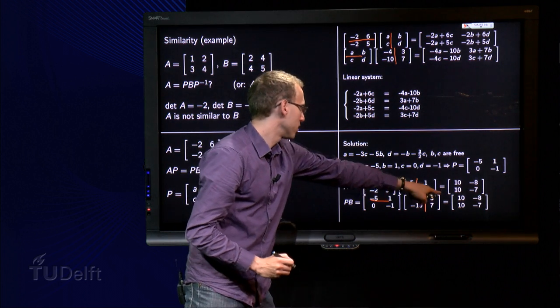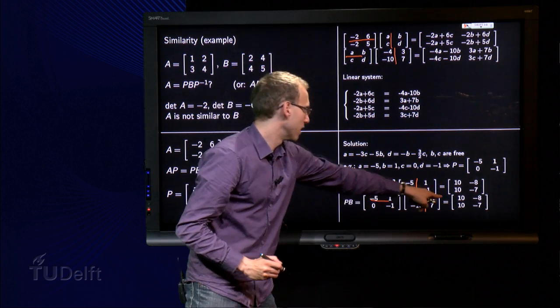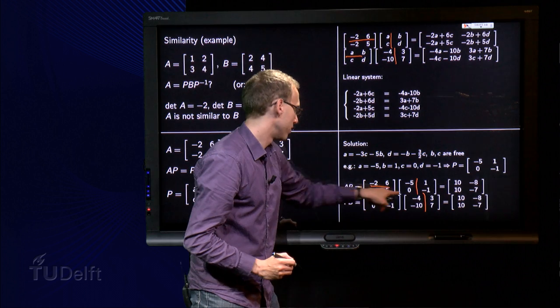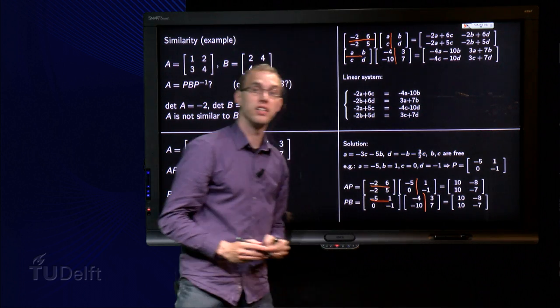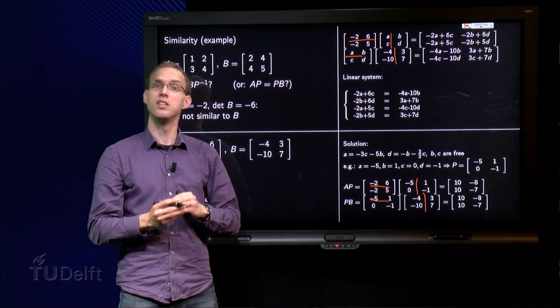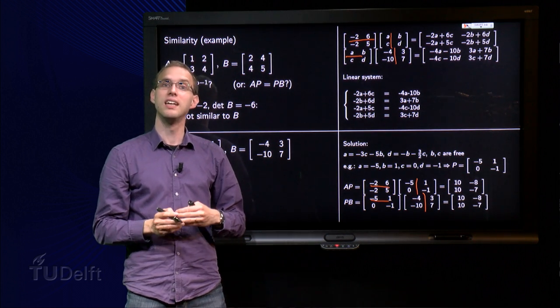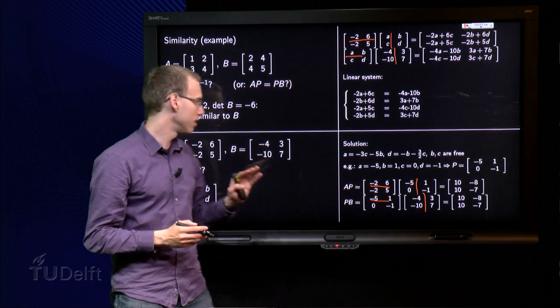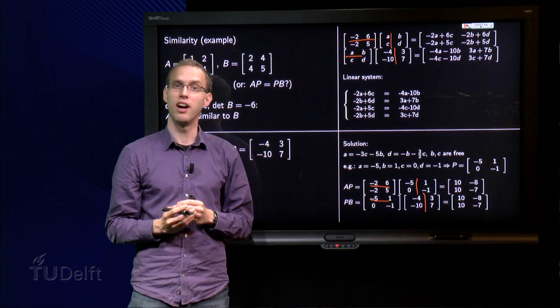And finally P times B. Twenty, minus ten, ten, zero, plus ten, ten, minus fifteen, plus seven, minus eight, zero, minus seven, minus seven, and we see indeed A times P equals P times B. So we didn't make any mistakes, and we have found out that this matrix A and this matrix B are similar.